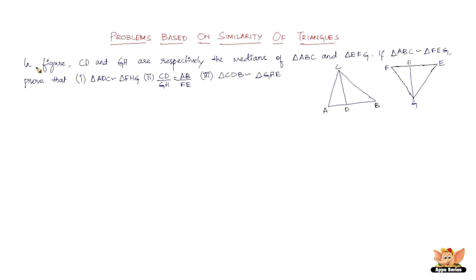Here we've got a question which reads like this. The given figures, that is triangles ABC and triangles FEG, CD and GH respectively are the medians of triangle ABC and triangle EFG. So if triangle ABC is similar to triangle FEG, we need to prove three things: that triangle ADC is similar to triangle FHG, that CD by GH equals AB by FE, and that triangle CDB is similar to triangle GHE.